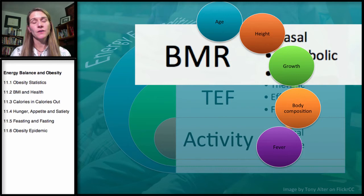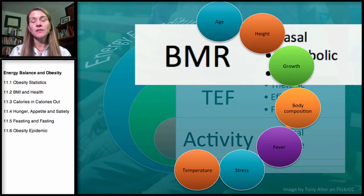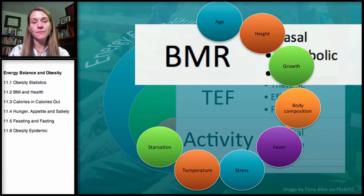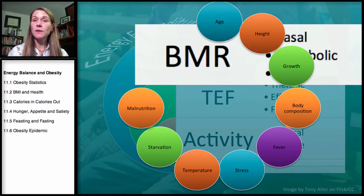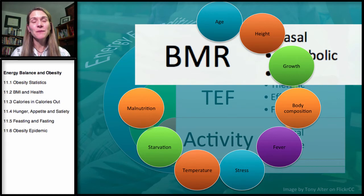Fever and illness increase basal metabolic rate, as does stress. Colder temperatures also increase BMR through shivering thermogenesis — your body must generate heat by shivering, burning more calories. Conversely, starvation and malnutrition actually decrease basal metabolic rate, because the body enters a food scarcity mode and slows everything down.